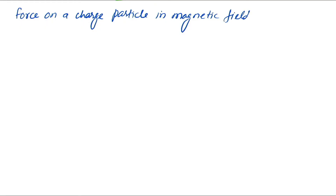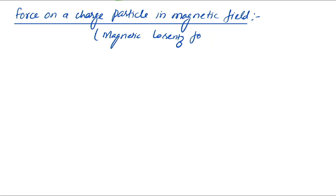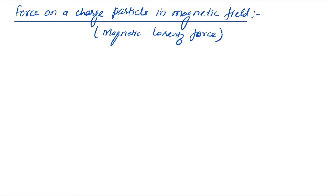Now let's find out what happens when the charged particle is subjected to a magnetic field — that is, the force on a charged particle in a magnetic field, or we can say the magnetic Lorentz force. First of all, let's set up a coordinate system. Let initially a positive charge be at the origin. When this charged particle moves in the magnetic field, it experiences a force. Let's find out what that force will be.